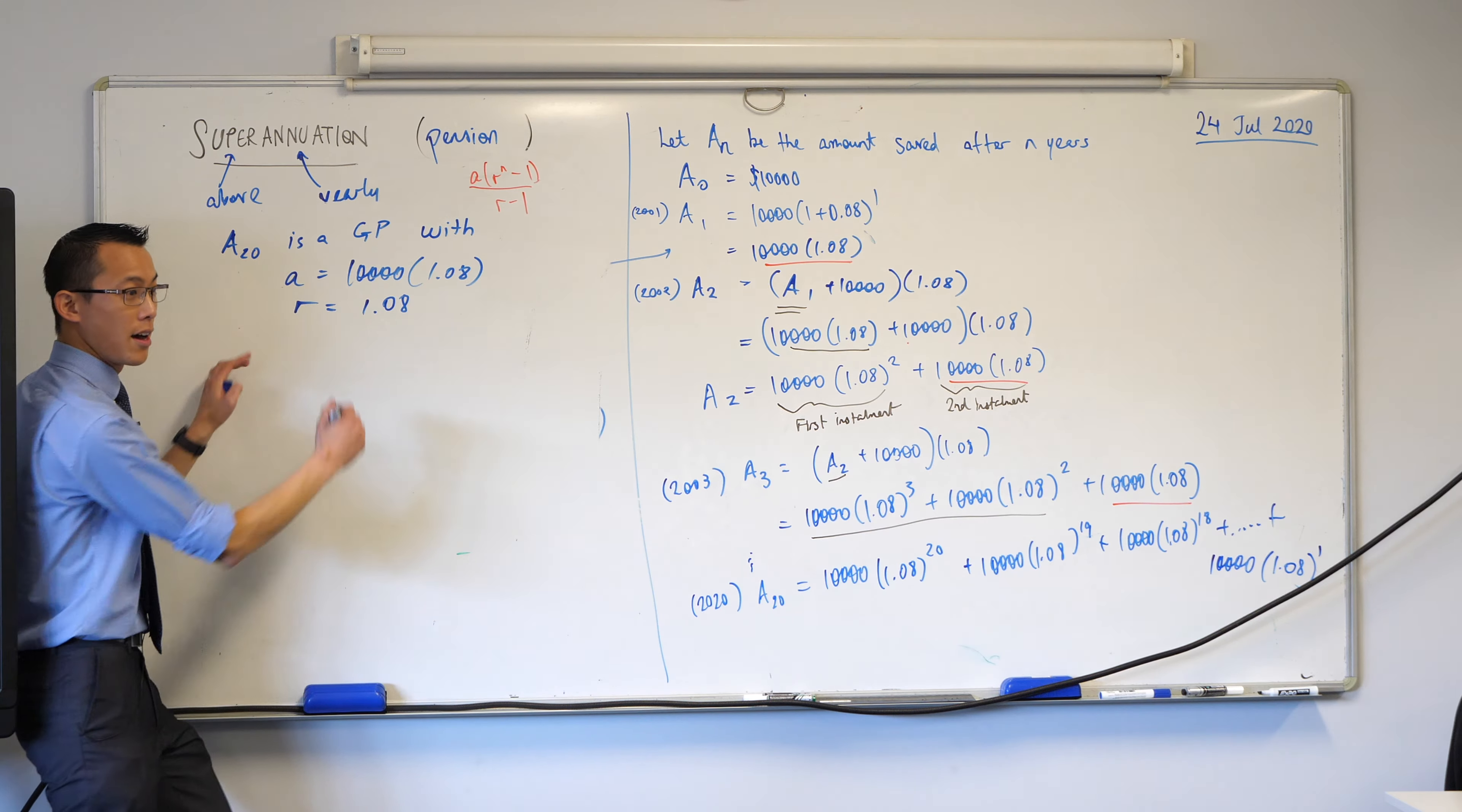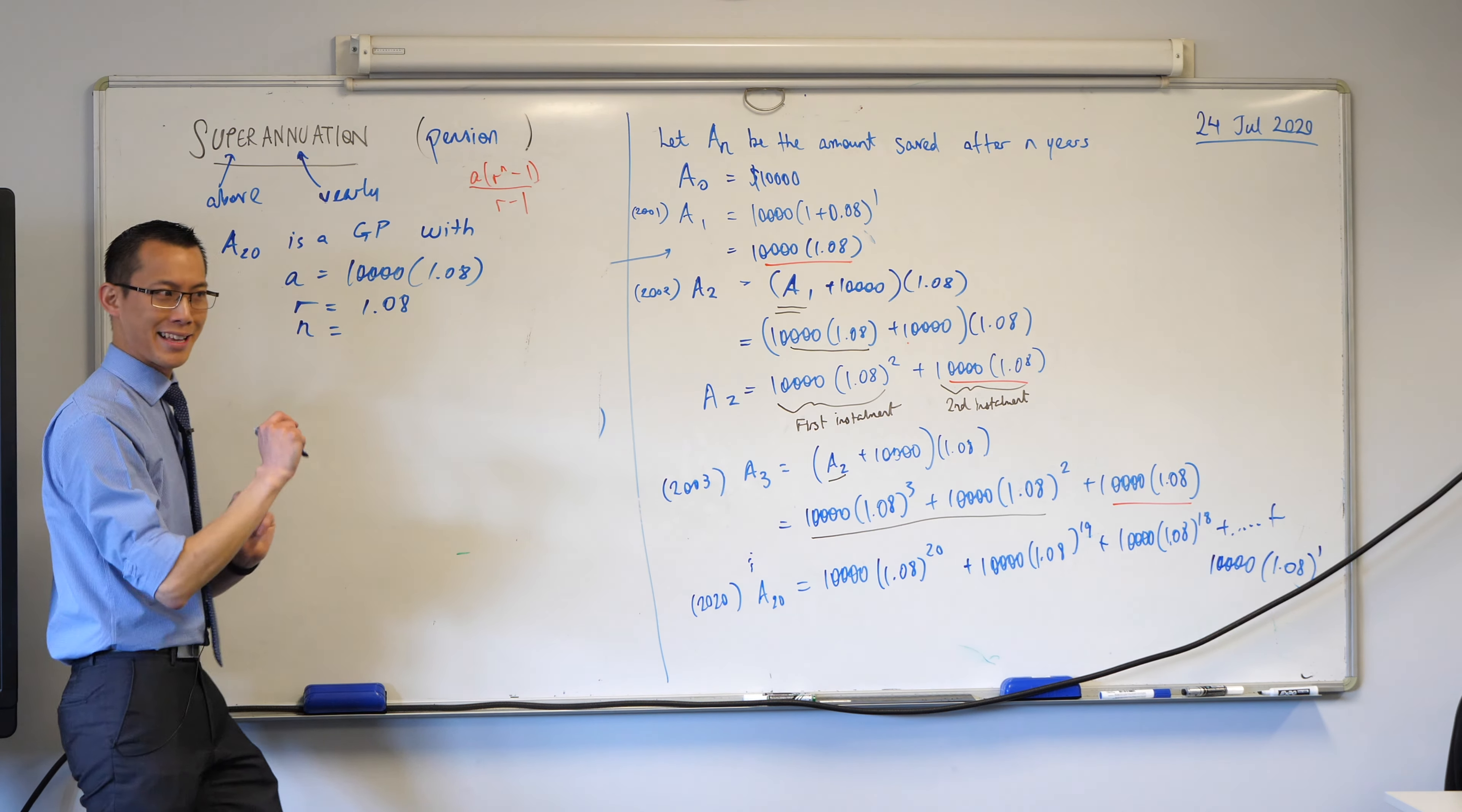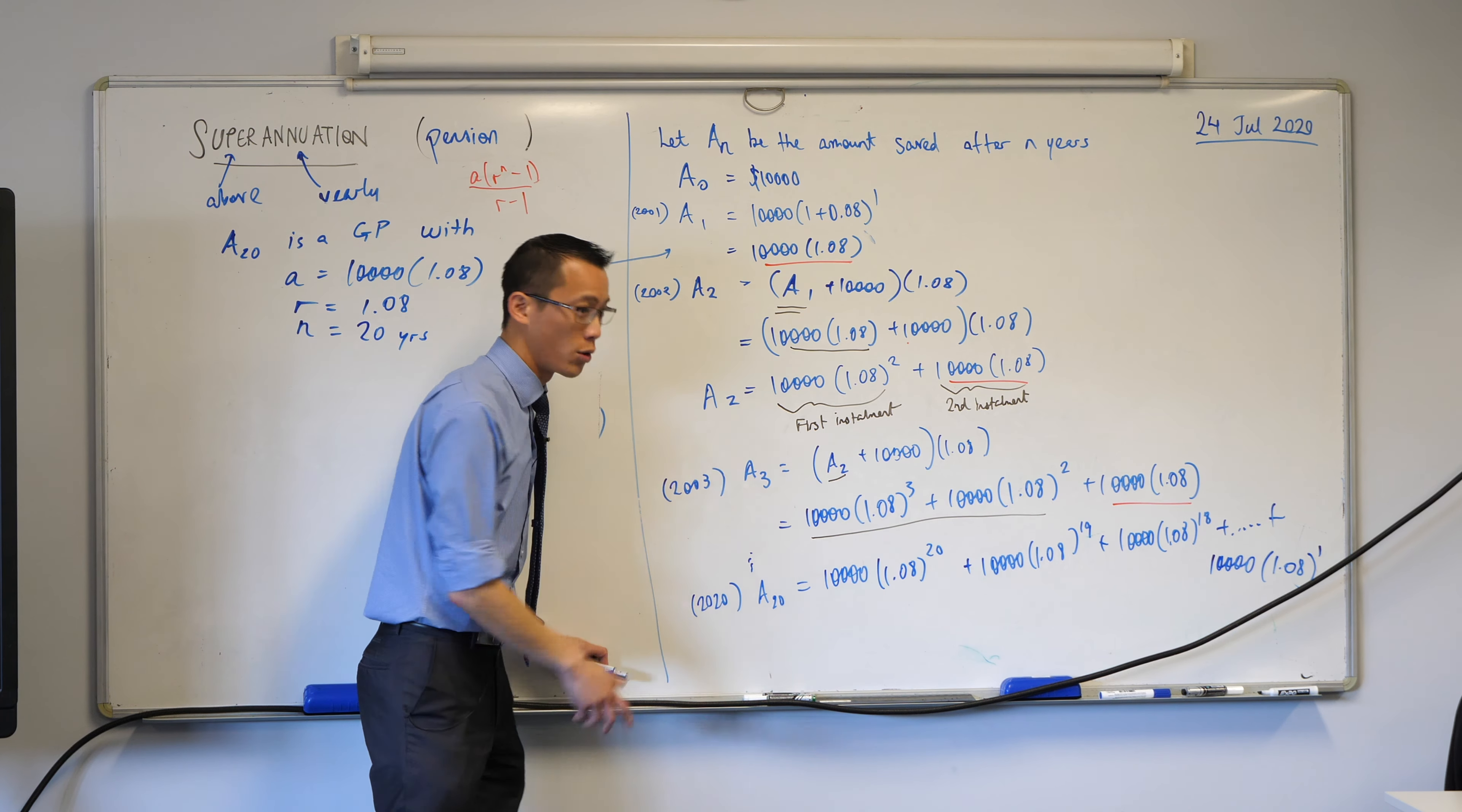That's A, that's R. What's N? It's the number of terms, which in this case is the number of years. But you've got to be careful. They're not always exactly the same. Put down your pens for a second because this is where you have to be very cautious. Look back over at the question over here.